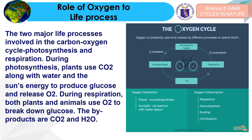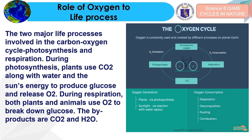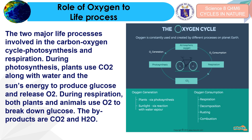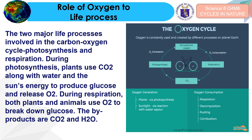There are two major life processes that involve the carbon-oxygen cycle: photosynthesis and respiration. During photosynthesis, plants use carbon dioxide along with water and the sun's energy to produce glucose and release oxygen. During respiration, humans and animals utilize oxygen to break down glucose, and the byproducts are carbon dioxide and water.